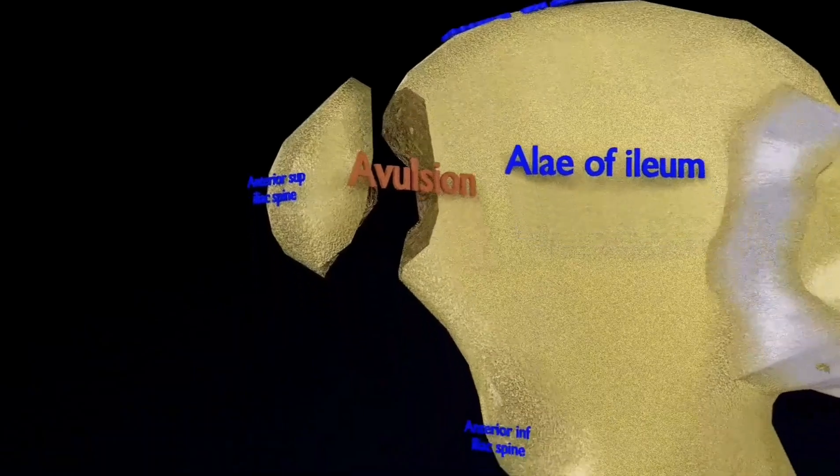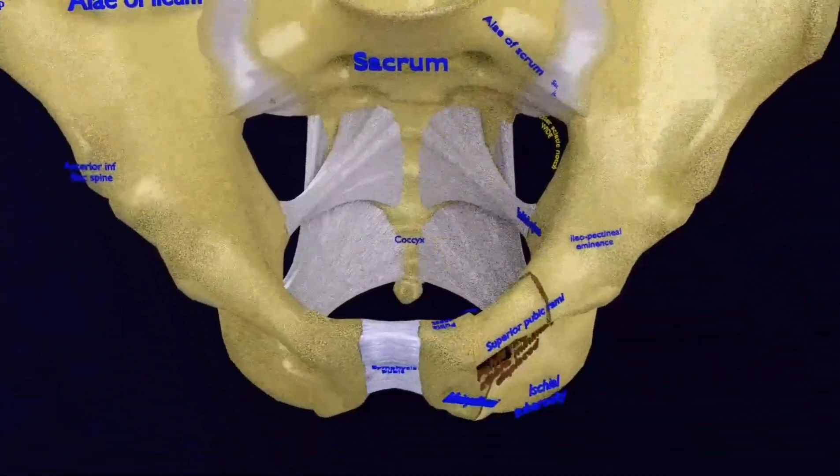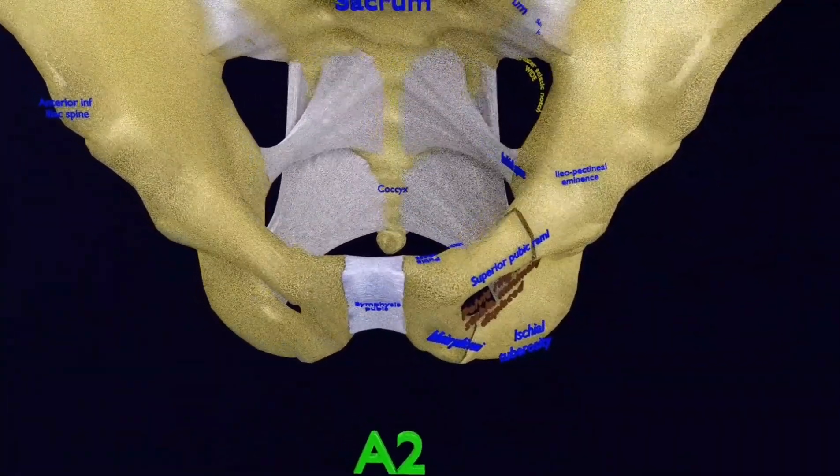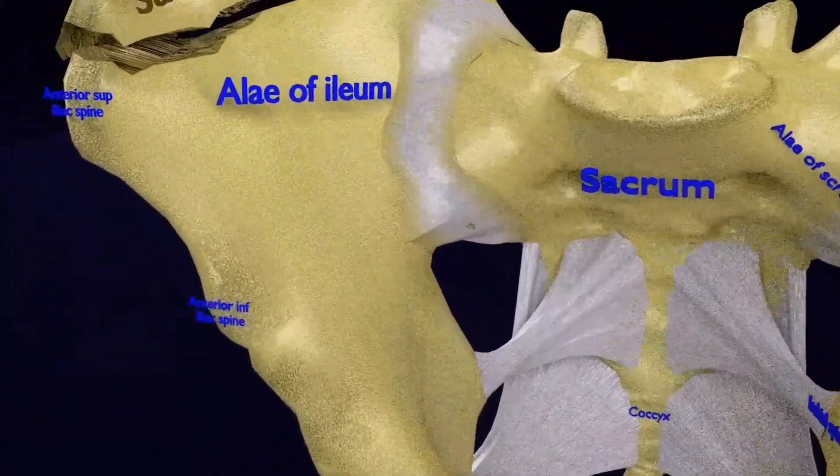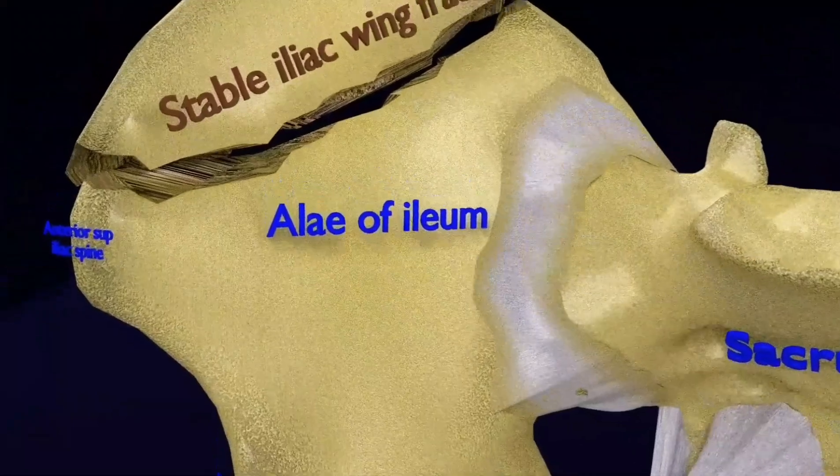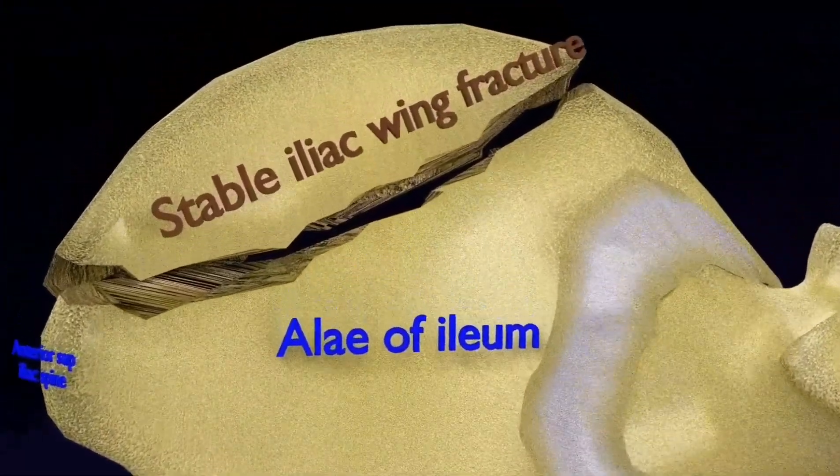And this is the A1 avulsion injury. In type 2 of Tile classification, the fracture happens in the iliac wing or anterior arch fracture due to a direct blow.